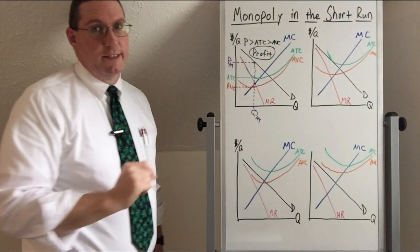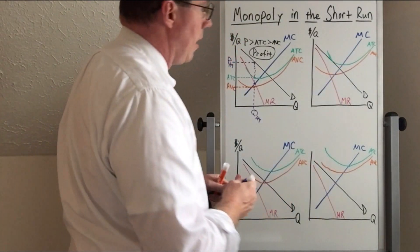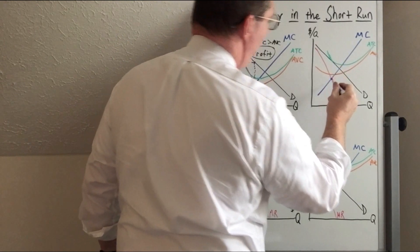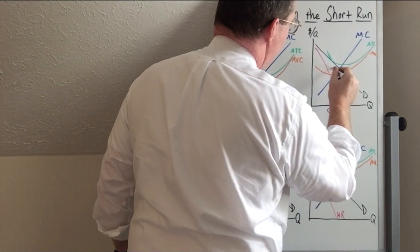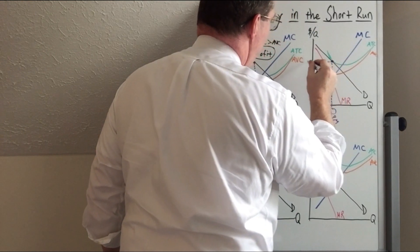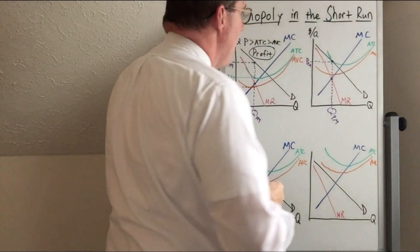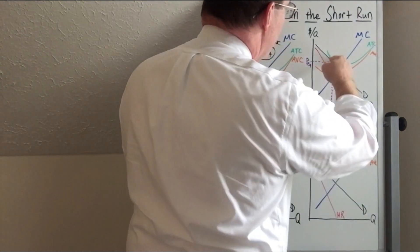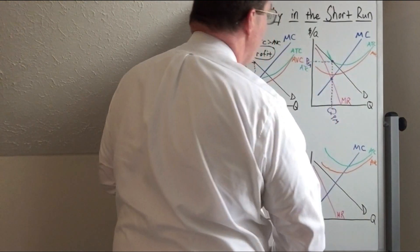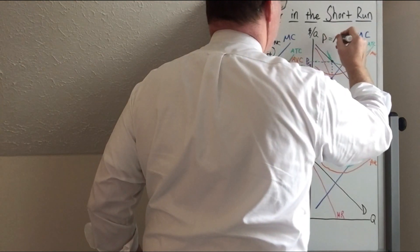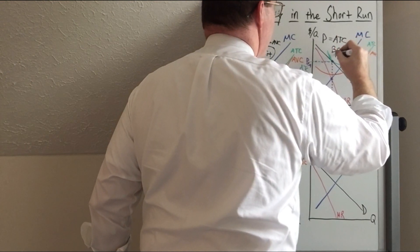This monopoly is profiting — it is earning positive economic profit. In this second circumstance, we go to where marginal revenue intersects marginal cost to find the profit-maximizing quantity, then up to the demand curve to find the profit-maximizing price. Something very interesting happens: that height is also exactly where the average total cost curve hits that quantity. So average total cost is equal to price, meaning this is the zero economic profit or break-even situation.